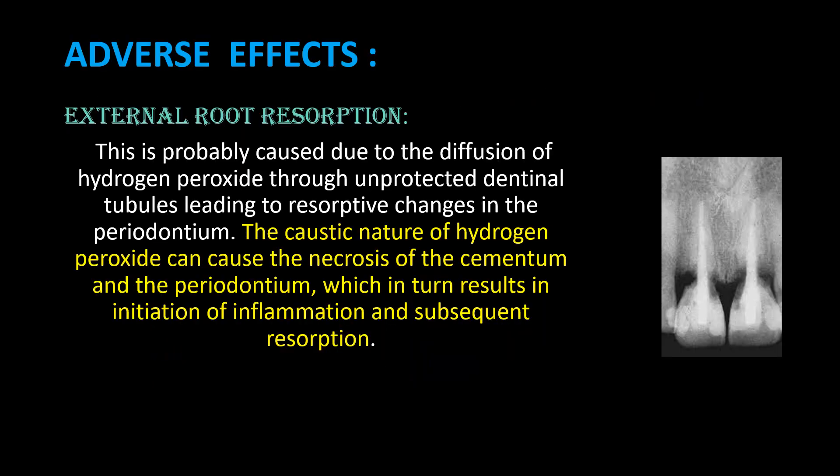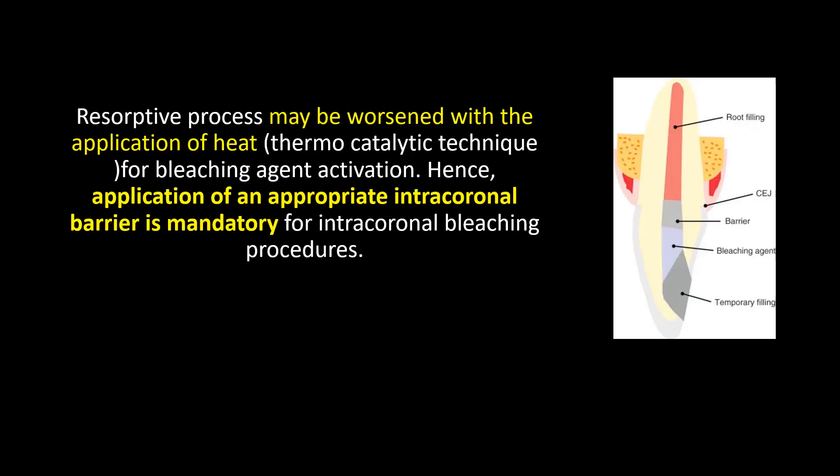Adverse effects include external root resorption. This is probably caused by the diffusion of hydrogen peroxide through unprotected dentinal tubules, leading to resorptive changes in the periodontium. The caustic nature of hydrogen peroxide can cause necrosis of the cementum and periodontium, resulting in inflammation and subsequent resorption. The resorptive process may be worsened with application of heat, as in the thermocatalytic technique for bleaching agent activation. Hence, application of an appropriate intracoronal barrier is mandatory for intracoronal bleaching procedures.